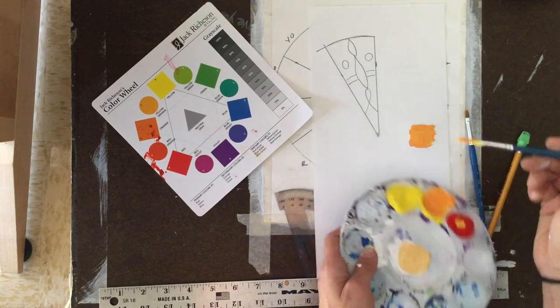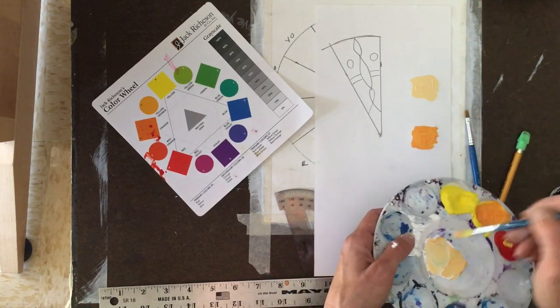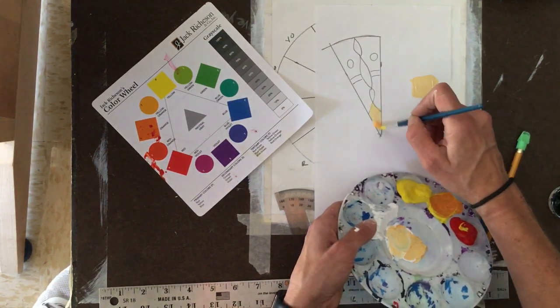Here I am creating a gradient to see what tints and shades I'm going to include in my piece of my color wheel.